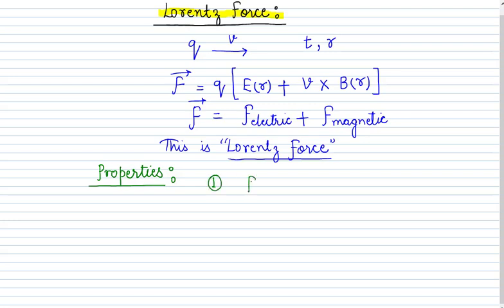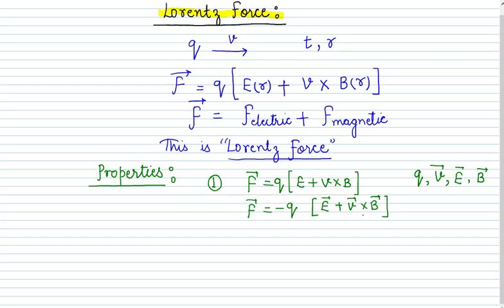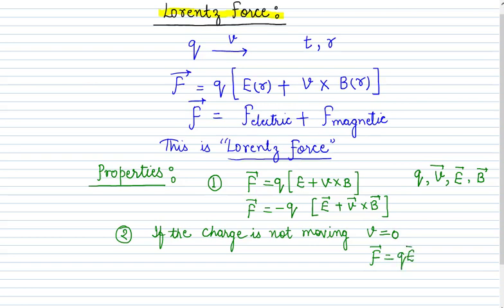The Lorentz force has certain properties. The formula is F equal to q times (E plus v cross B). So the Lorentz force depends on q, it depends on velocity v, it depends on electric field E, and it depends on magnetic field B. If the charge is negative, then the force becomes F equal to minus q times (E plus v cross B), so for a negative charge the force is in the opposite direction. The second property: if the charge is not moving, meaning velocity v is zero, then the magnetic field component will be zero and we will have only the electric force.